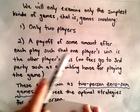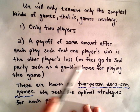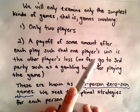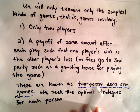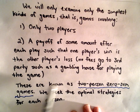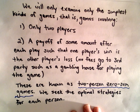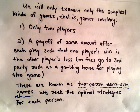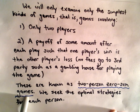A payoff of some amount after each play will occur, and it happens in a way so that one player's win is the other player's loss. No fees or anything like that go to a third party such as a gambling house — there's no rake, for example, if you've played poker before. These are known as two-person zero-sum games.